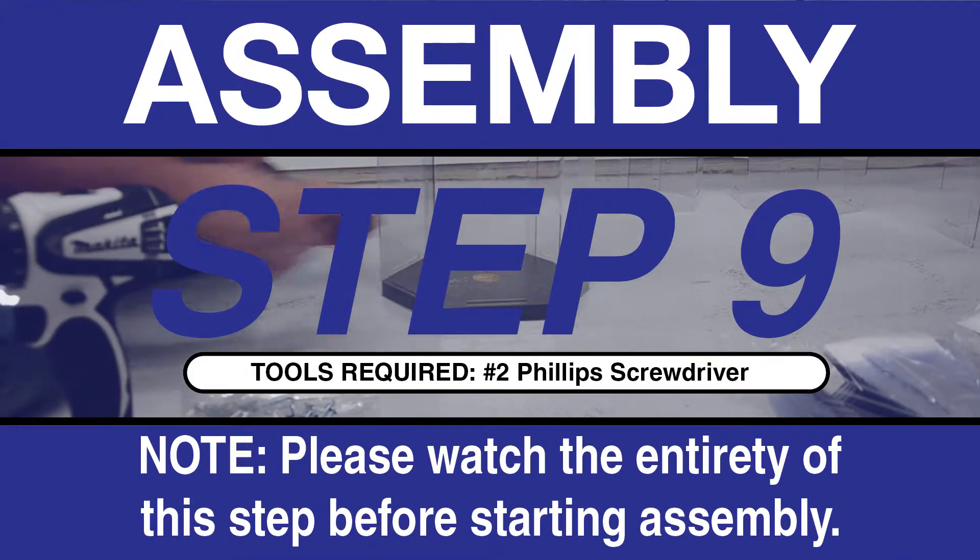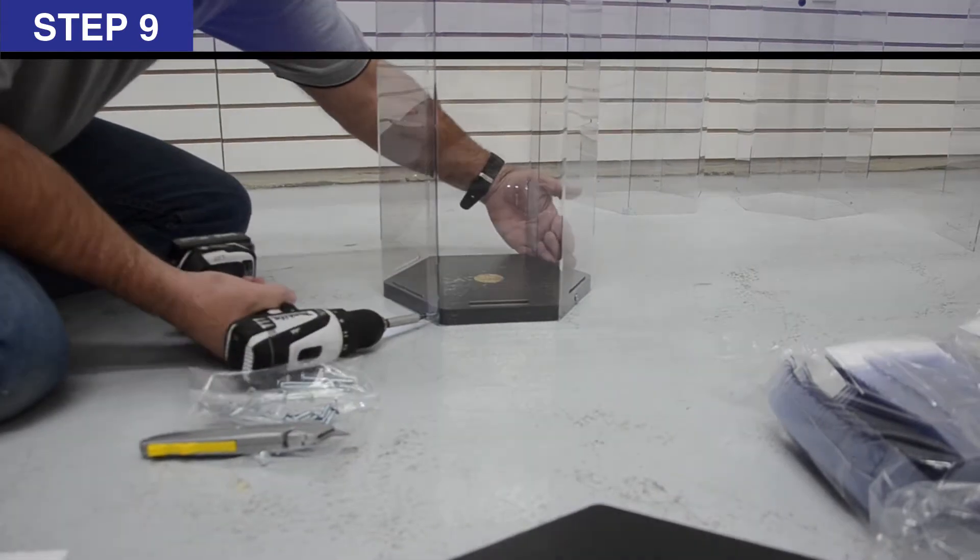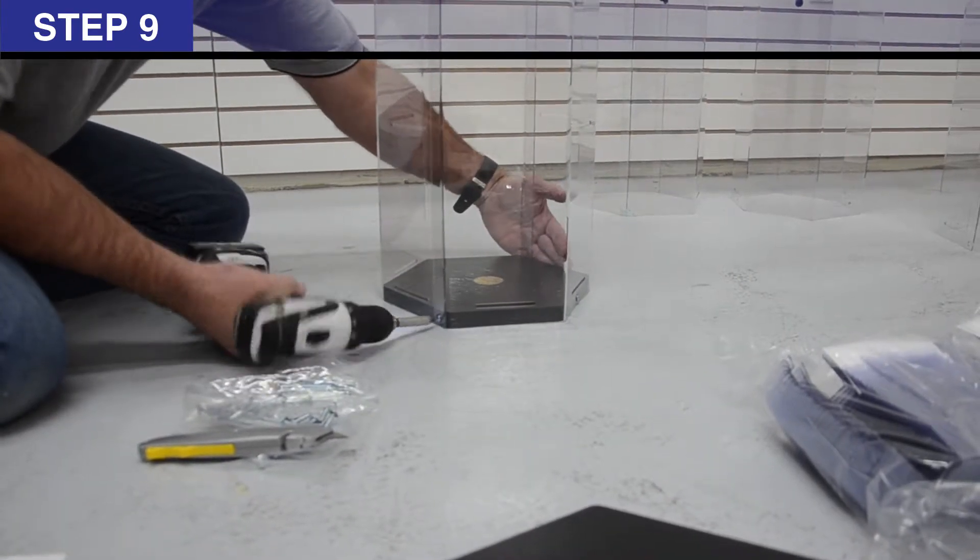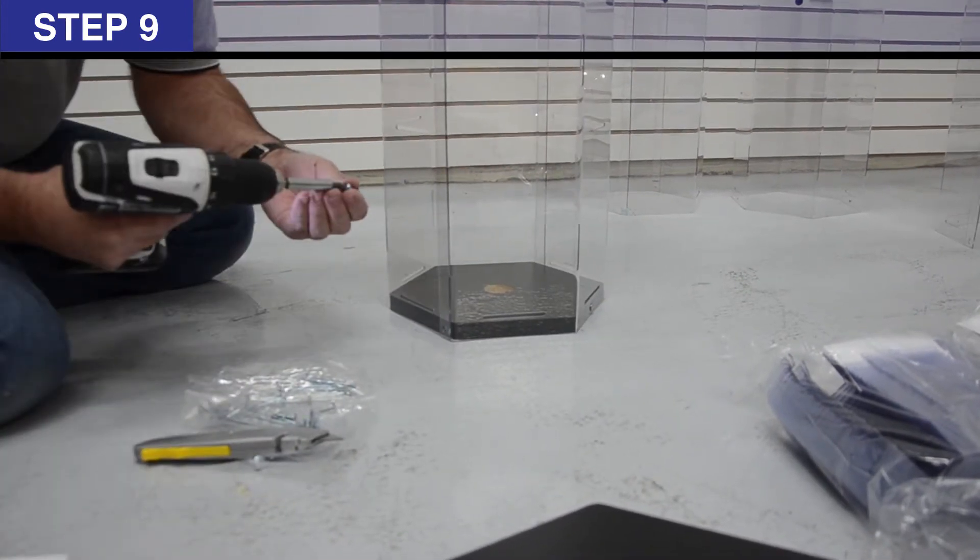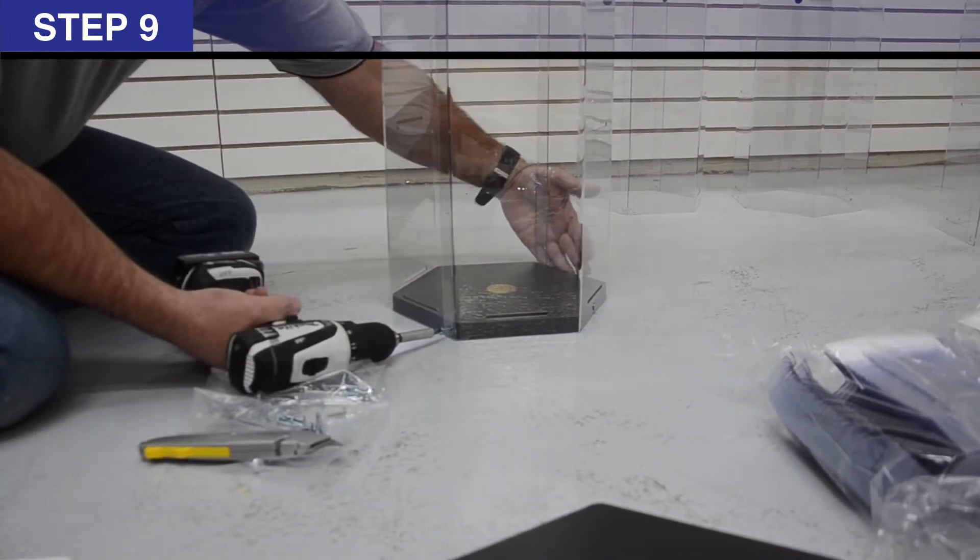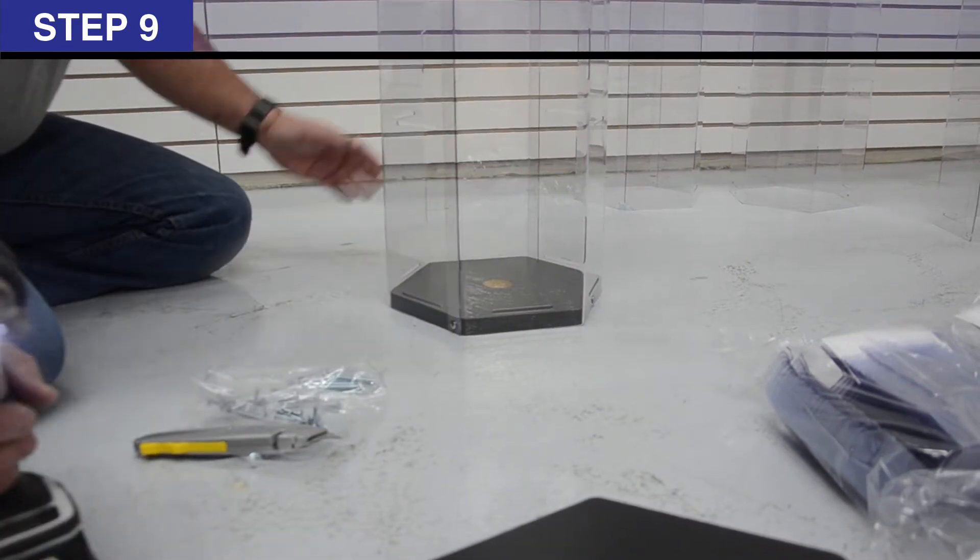Step 9: Continue to secure tower panel assembly M to spinner plate P at corner holes of tower panel assembly.